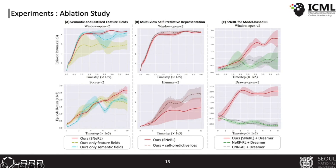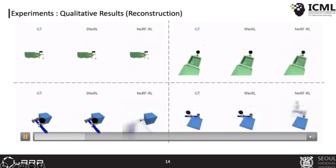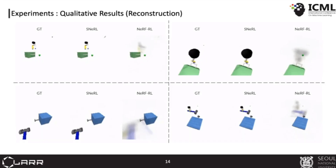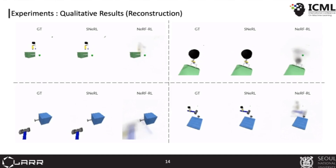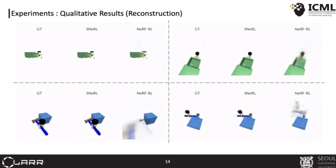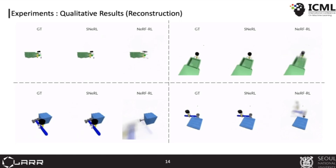As shown in the rightmost figures, we also demonstrated the effectiveness of SNARF in model-based frameworks. We compared the image rendering performance of SNARF and NARFRL. As NARFRL originally aims to synthesize images of arbitrary camera views from a static scene, it cannot reconstruct dynamic scenes. On the other hand, SNARF well represents the dynamic scene and produces high-fidelity rendering outputs.